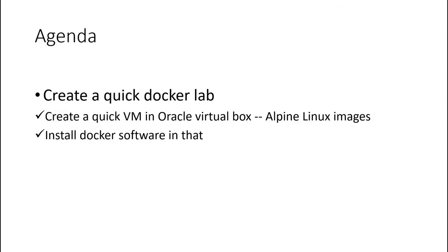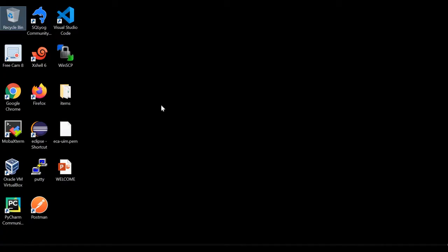Hey guys, welcome to Programmer Guide. Today's agenda is we will create a quick toggle lab. For that we will be using Oracle VirtualBox, and for the image we will be using Alpine Linux. Alpine Linux is much simpler, secure, and resource-efficient compared to other Linux distributions like Red Hat, CentOS, Ubuntu — those are much more resource-consuming. Once the VM is created we will install Docker on it.